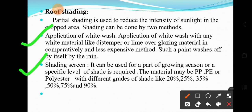Application of whitewash with white material like distemper or lime over the glazing material is a less expensive method. Such paint washes off by itself in the rain, making it a temporary roof shading method. Shading screens can be used for part of the growing season or when a specific level of shade is required. The screen material may be PE or polyester, with different grades of shading available: 20%, 25%, 35%, 50%, 75%, and 90%.